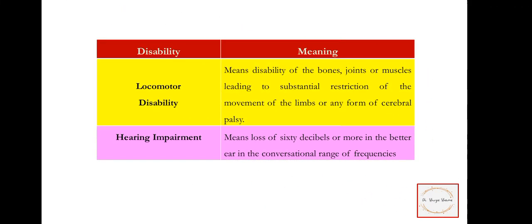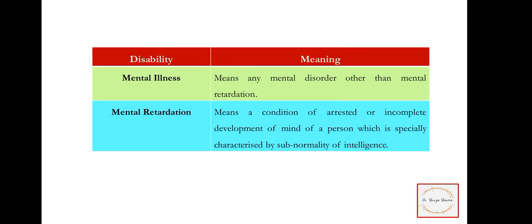Now let's talk about the types of disability. Locomotor disability — when there is a problem in the locomotor system, the patient has locomotor disability. Hearing impairment — the patient has a problem with hearing. Mental illness and mental retardation — the patient has a mental disorder due to which he is facing difficulty.